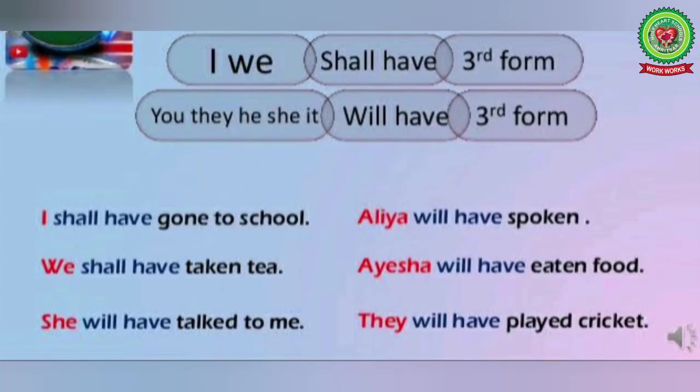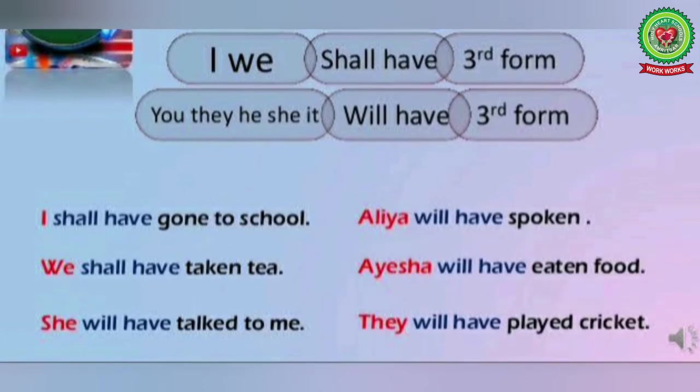Now we will discuss a few examples. The first example is: 'I shall have gone to school.' 'I' is used as subject, so we use 'shall have.' Here, 'gone' is your past participle or third form of verb. Similarly, in the second sentence, the subject is 'we,' so again we use 'shall have' followed by your past participle.